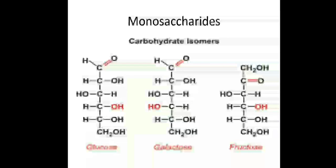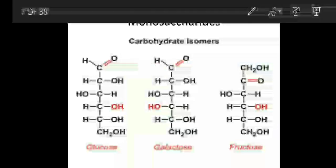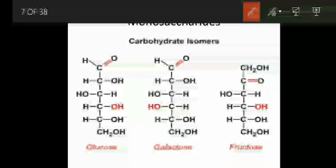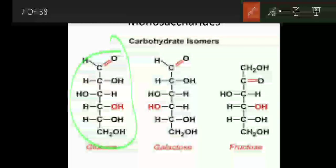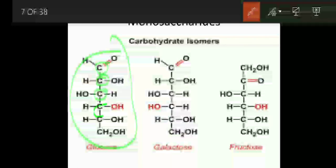Next are the structures of monosaccharides. This is the structure of glucose. The formula of glucose is C6H12O6. This is the first carbon, second, third, fourth, fifth, and sixth carbon atom.